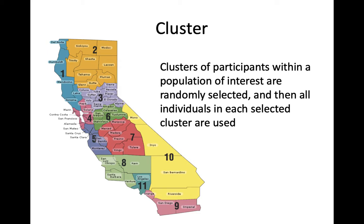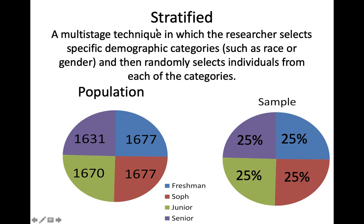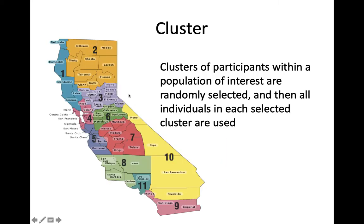Another probability sampling technique is called cluster sampling. Here, clusters of participants within a population of interest are randomly selected, and then all individuals in each selected cluster are used. The key distinction from stratified sampling is that with stratified sampling you randomly sample within each stratum, whereas with cluster sampling the random process is to randomly determine your clusters, and then you include every single individual in that cluster.